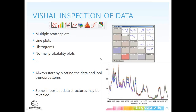After importing data, it's important to visually inspect it. The Unscrambler X provides many plot types including multiple scatter plots, normal probability plots, histograms, matrix plots, line plots, and scatter and bar plots. It's always a good idea to start by plotting your data and looking for trends and patterns — some important data structures may be revealed, as well as errors or anomalies. Always visualize your data before you analyze it.